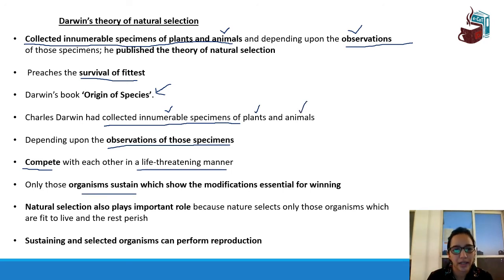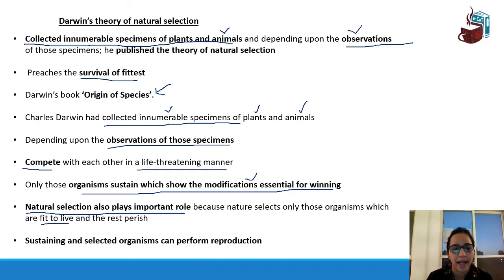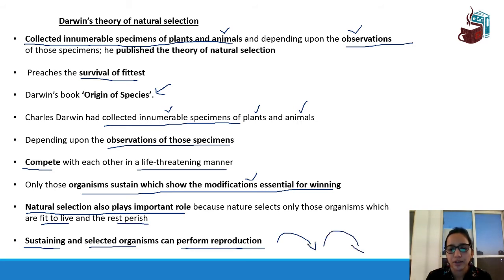Only those organisms which show modifications essential for winning will survive on planet Earth. Natural selection plays an important role — nature selects the fittest, which relates to immunity of an organism; those naturally fit to live survive and sustain. Not only surviving, but living a healthy life is called sustaining. Selected organisms can perform reproduction so their species continues from one generation to the next.